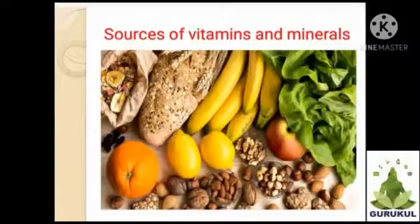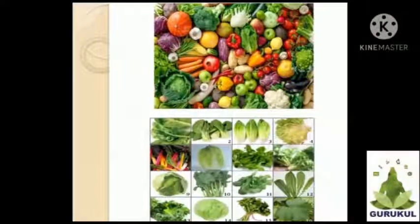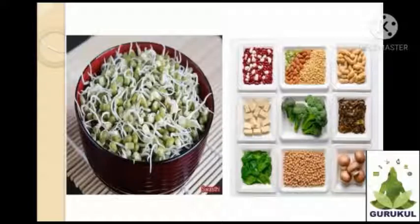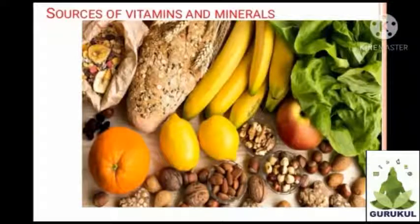All kinds of fruits, vegetables, green leafy vegetables, sprouted pulses, their skins and bran of cereals are all sources of vitamins and minerals. That is why, as far as possible, we should eat fruits with their skins and not sieve flour to throw away the bran.